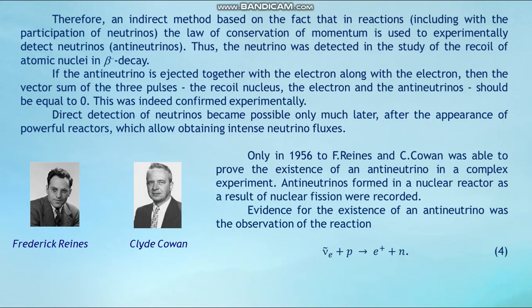Therefore, an indirect method is used to experimentally detect neutrinos and anti-neutrinos, based on the law of conservation of momentum in reactions involving neutrinos. The neutrino was first detected through study of the recoil of atomic nuclei in beta minus decay. If an anti-neutrino is ejected together with the electron, then the vector sum of the three momenta — of the recoil nucleus, the electron, and the anti-neutrino — should equal zero. This was indeed confirmed experimentally.